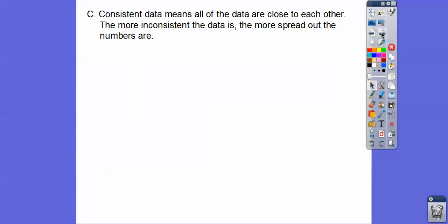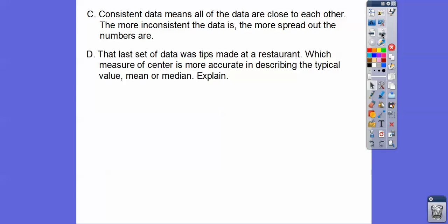Consistent data means all the numbers are close to each other. The more inconsistent the data is, the more spread out the numbers are. So in the last set of data, it was tips made at a restaurant. Those numbers represented tips made at a restaurant. So which measure of center is more accurate than that last set of data describing the typical value, was it the mean or the median?